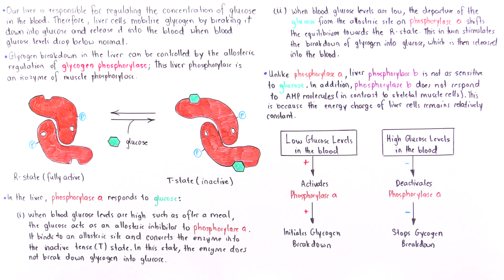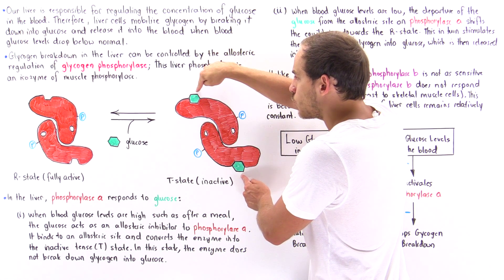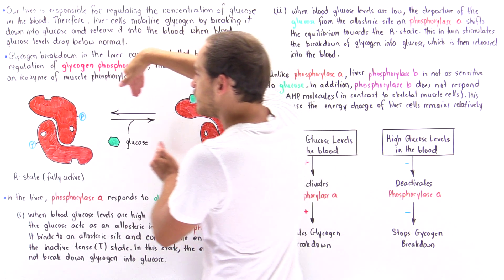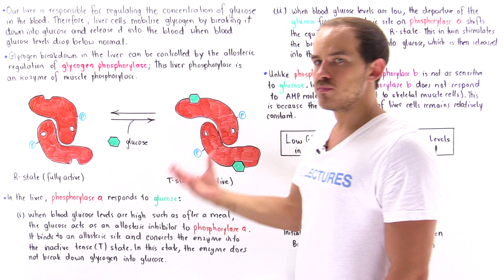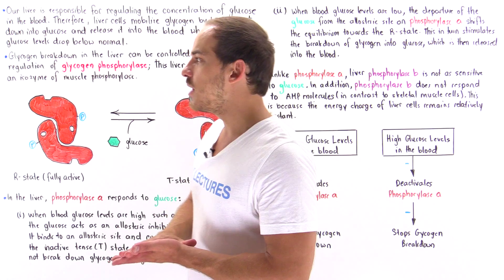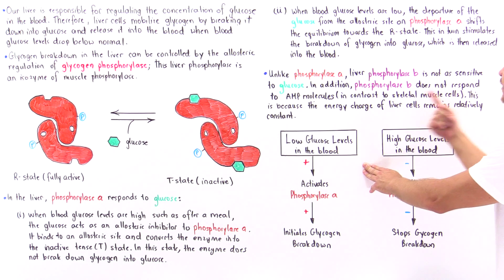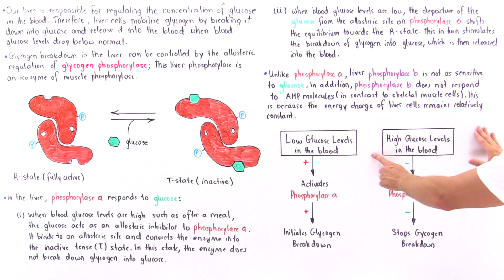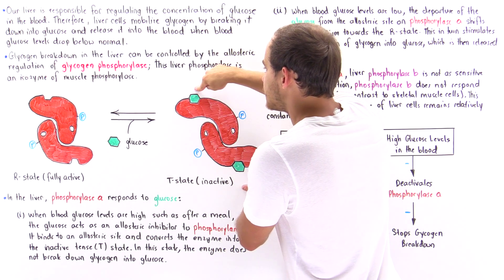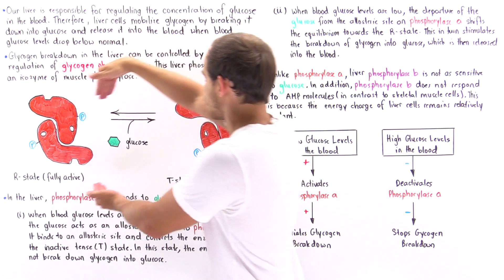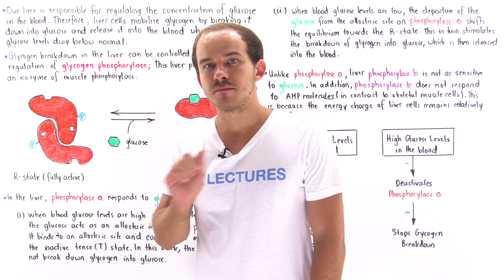To summarize: when blood glucose levels are low, glucose molecules depart from the regulatory sites on liver phosphorylase A, shifting the equilibrium toward the R state, activating the enzyme and initiating glycogen breakdown. The released glucose molecules enter the blood and restore blood glucose to normal levels. On the other hand, when blood glucose levels are high — such as after eating a carbohydrate-rich meal — glucose molecules enter liver cells, bind to the special regulatory sites, shift the enzyme into the T state, and stop both glycogen breakdown and glucose release into the blood plasma.